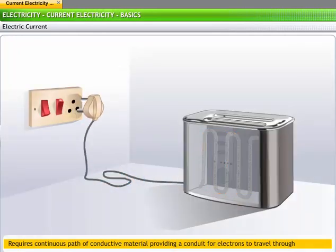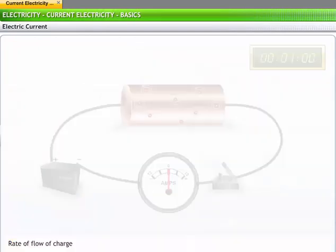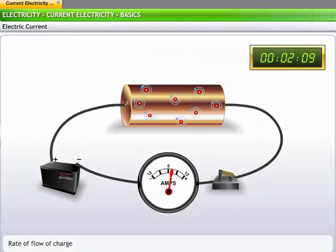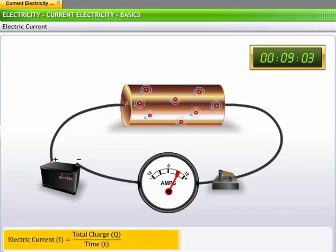When you unplug an appliance, say a toaster from the power supply, the flow of electrons is interrupted and the appliance stops working. You can measure electric current as the rate of flow of charge or the amount of charge flowing through a point per unit time.